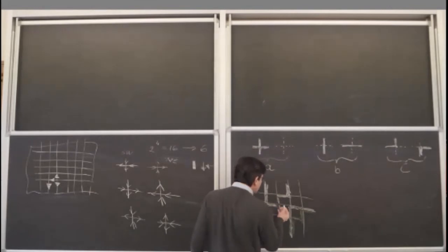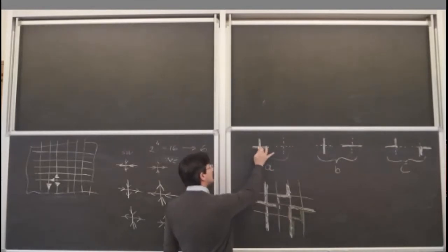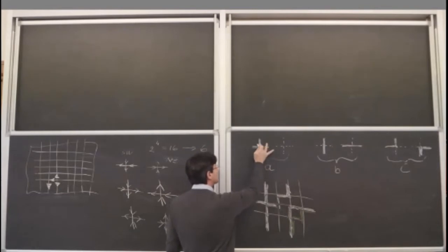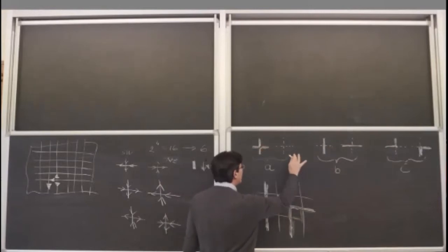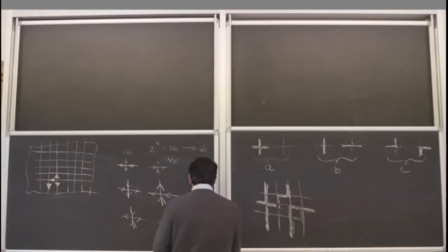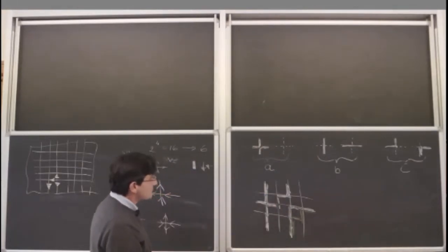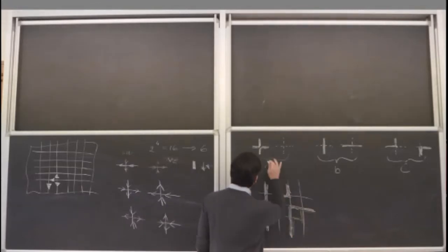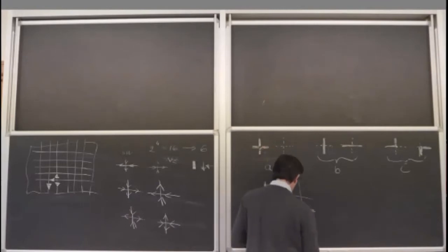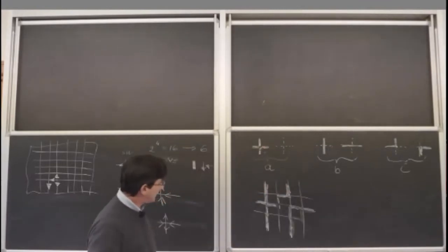Actually, this is not entirely true here, because the paths can intersect or at least touch. If you choose a very particular weight for the vertices, then you can reduce the problem to non-intersecting paths — a free-fermionic problem. But in general, you have paths which can interact because they have weights according to their relative positions.